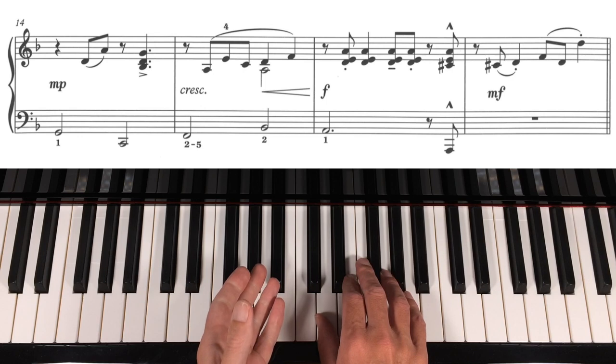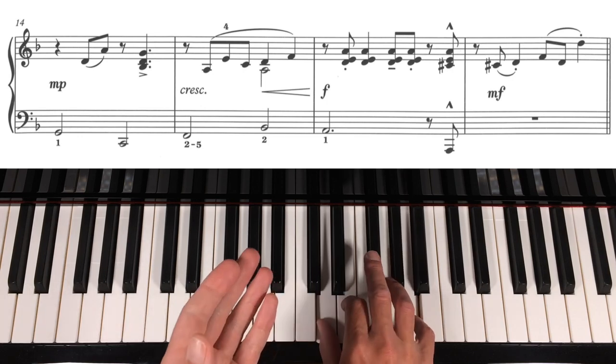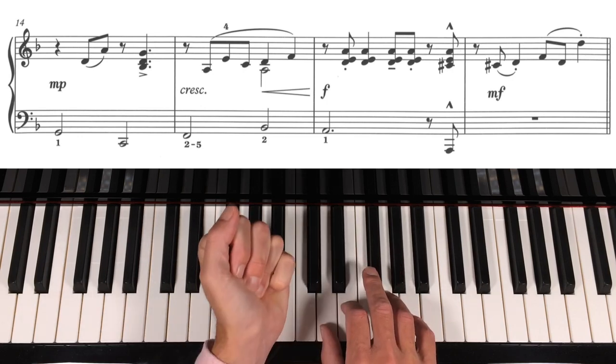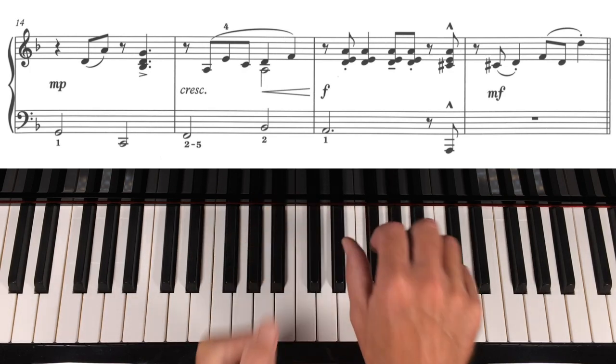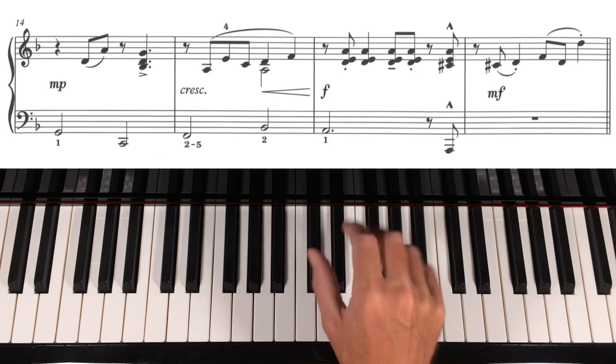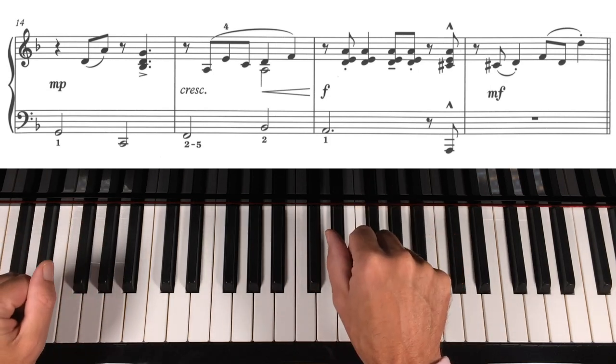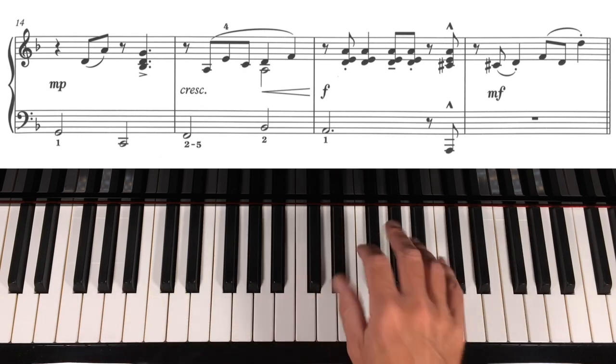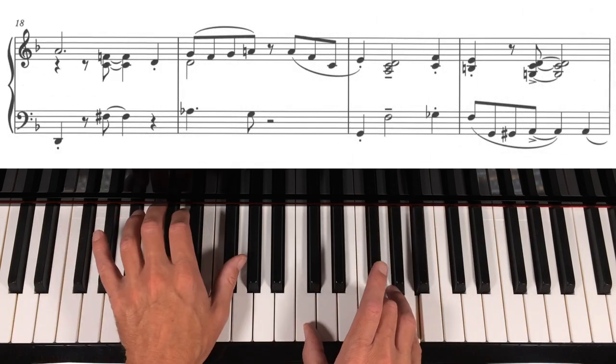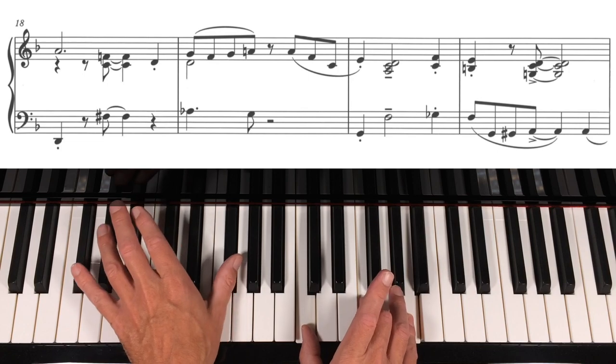Again, did you notice those accents in there? That lean on that one for the tenuto. And a bit of a whack. Nice and short. Both hands at the end. And then we're into familiar territory, aren't we? Jump the fifth. That lovely major third, minor third thing combined.